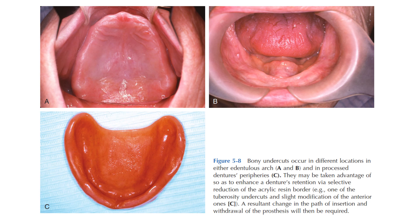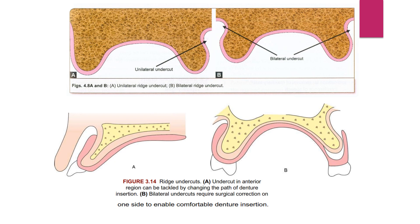Bony undercuts occur in different locations in either edentulous arch — the maxilla and mandible. Bony undercuts are present in both maxillary and mandibular arches, and also in the denture peripheries. They may be taken advantage of to enhance denture retention via selective reduction of acrylic resin border — such as tuberosity undercuts — and slight modification of the anterior ones, requiring a change in the path of insertion and withdrawal.